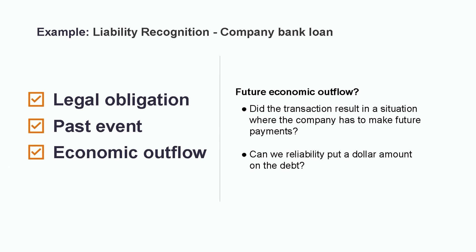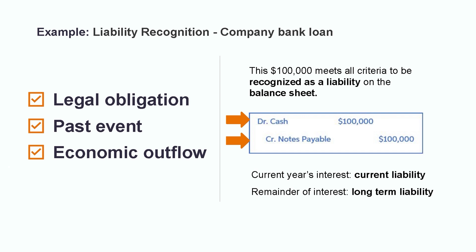And we also know the specified time frame of four years. From this analysis it appears that this $100,000 expenditure meets all of the required criteria to be recognized as a liability on the balance sheet. This $100,000 would be the initial measurement of the liability, which we'll discuss a little bit more later. The accounting entry would be an increase or debit to the company's cash for $100,000 that they received, with the corresponding increase of $100,000 or credit to the company's notes payable liability. The portion due back within the current year, such as the current year's interest, would be reported as a current liability, and the remainder would be listed as a long-term liability.